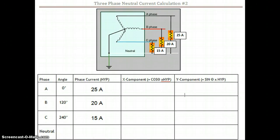Alright, next neutral calculation. This one's got 25 amps on A, we've got 20 amps on B, and we've got 15 amps being pulled by this load on the C phase.